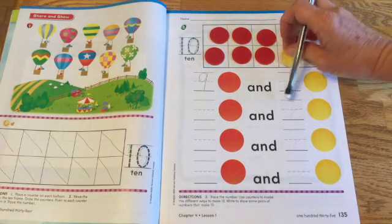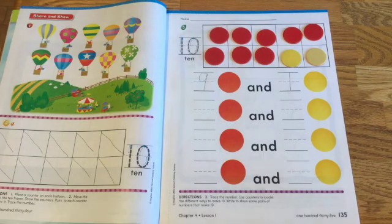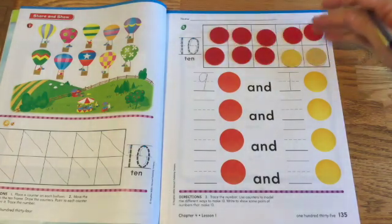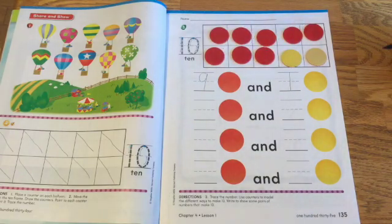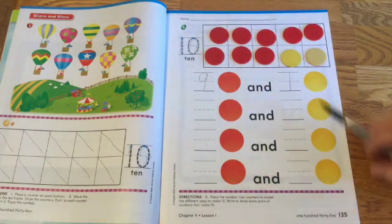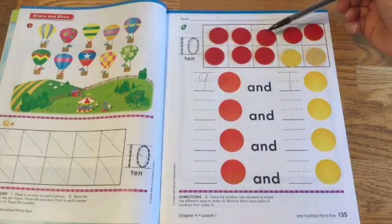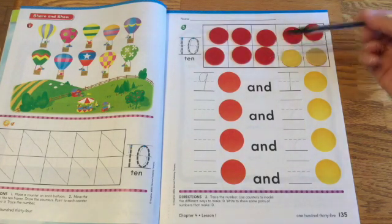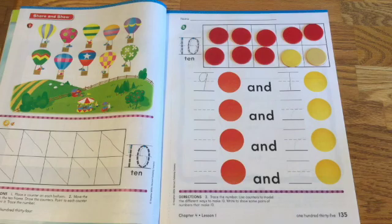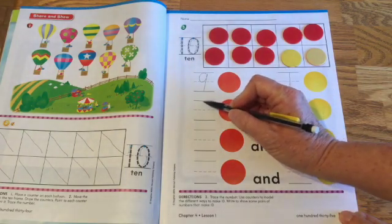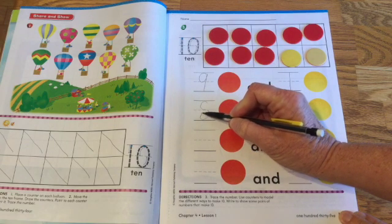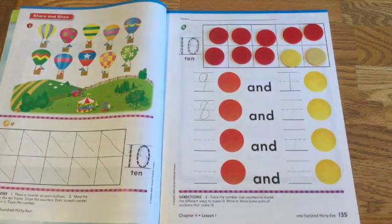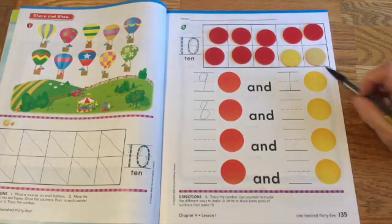All right. I'm going to flip one over. How many do we have all together? That's right. We still have ten. We still have our ten frame. How many are red? Let's count the reds. One, two, three, four, five, six, seven, eight. Who remembers how to make an eight?